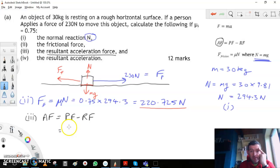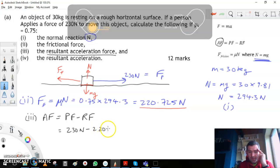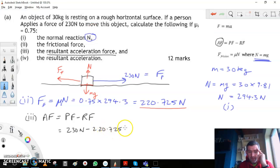We're given that as 230 newtons minus the resistance force we worked out at 220.725. Earlier I prepared, I get 9.275 there for the resultant acceleration force. That there is the answer to part three.